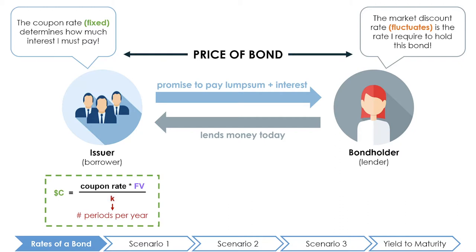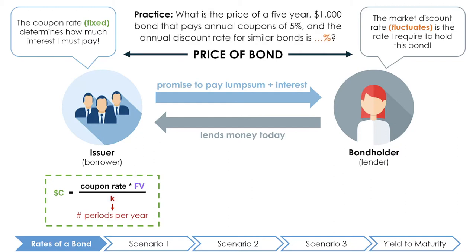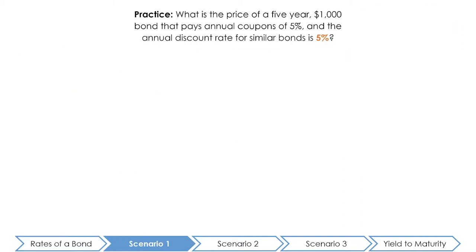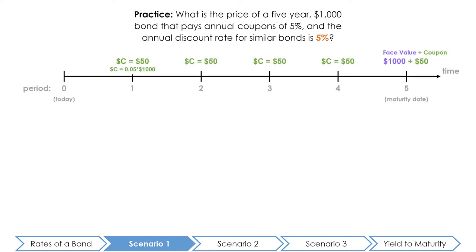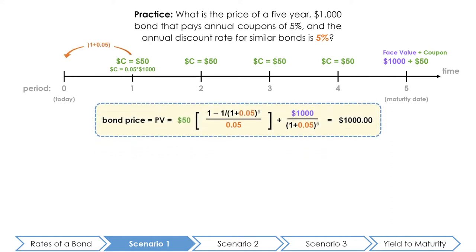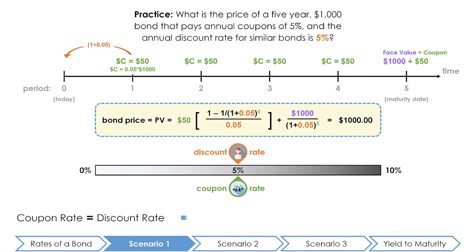To illustrate this relationship, let's work with an example of a five-year $1,000 bond that pays annual coupons at a rate of five percent. As we change the annual discount rate relative to the annual coupon rate, the price of the bond will also change. If the annual discount rate is equal to the coupon rate of five percent, we find that the price of the bond is equal to one thousand dollars — equal to the principal. When the coupon rate equals the market discount rate, the bond sells at par.